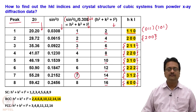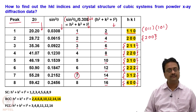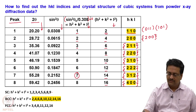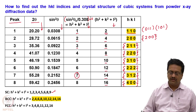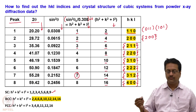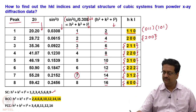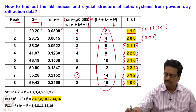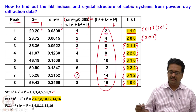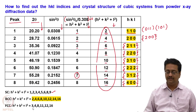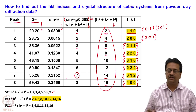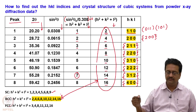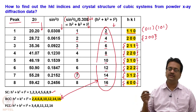For a simple cubic system, h²+k²+l² should equal 1, 2, 3, 4, 5, 6, 8, 9, and so on. For a body-centered cubic lattice it must be 2, 4, 6, 8, 10, 12, 14, and 16. For face-centered cubic it must be 3, 4, 8, 11, 12, and 16. By looking at the fifth column and comparing with the BCC values, we conclude that this is a body-centered cubic lattice.